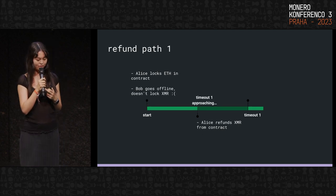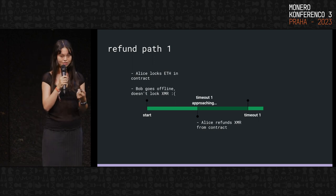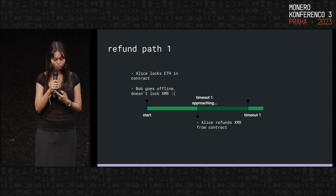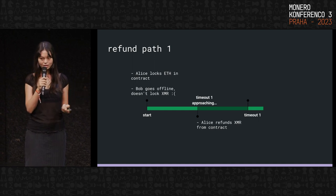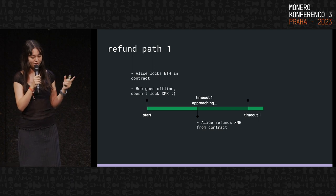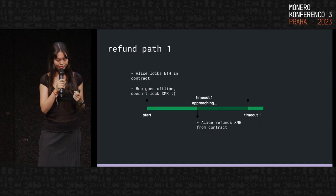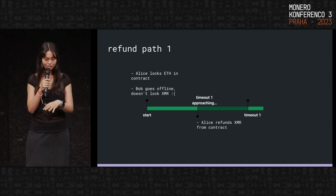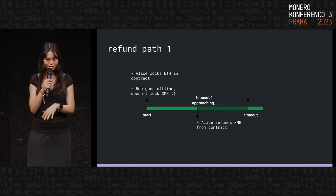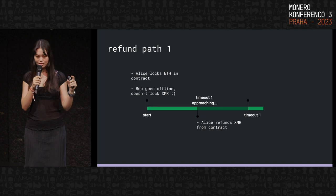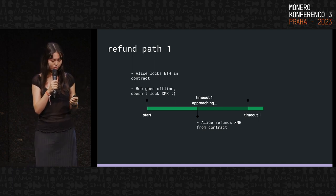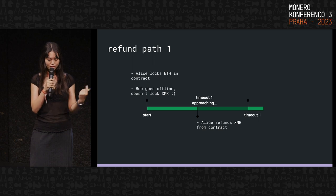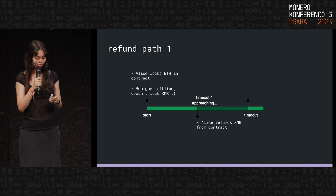There are two possible refund paths if something goes wrong, for example if someone goes offline. Both parties do need to remain online for the duration of the swap. The first refund path: Alice locks ETH and then Bob goes offline and never locks the Monero. There's a timeout in the contract, and as that first timeout approaches, if no Monero has been locked, Alice calls a function on the contract to refund the ETH. This refund function similarly takes Alice's swap secret. If Bob did lock for whatever reason but Alice didn't find out, Bob will still be able to refund as well.